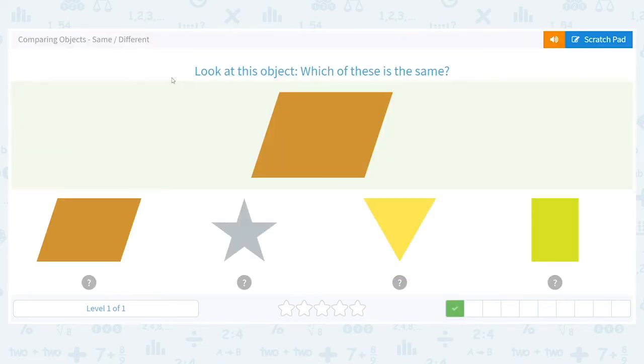Oh, look at this object. Which of those at the bottom is the same as what you see up here? This shape looks like a funny shape, but we call it a parallelogram. I hope you noticed. I hope you picked it. Our first choice is the answer.